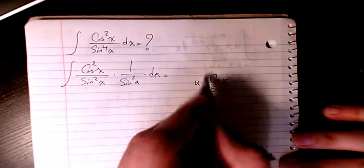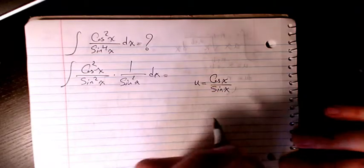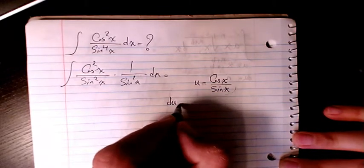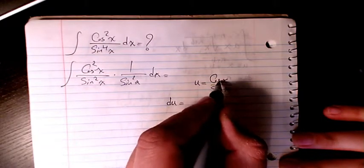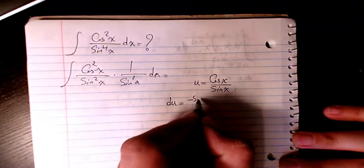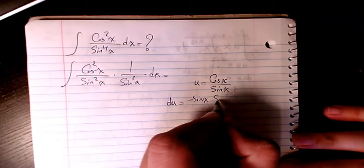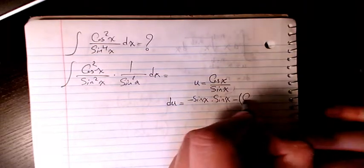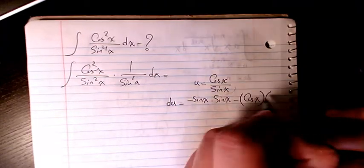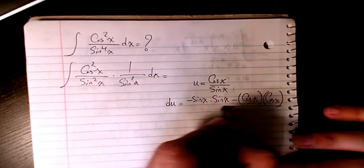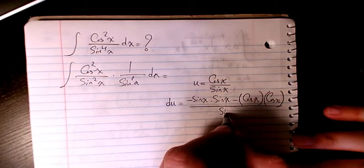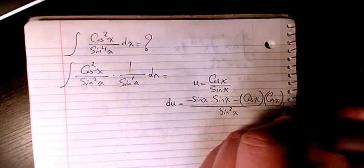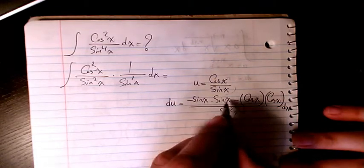So u as cotangent x. If you don't know the derivative, you can find it. The du is going to be the derivative of the numerator, which is negative sine, times denominator, minus the derivative of the denominator times numerator, divided by denominator squared. And don't forget to put the dx in here.